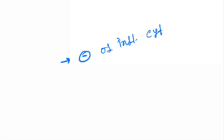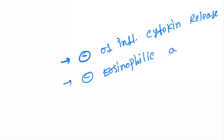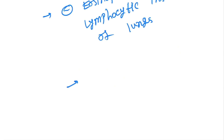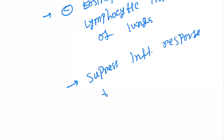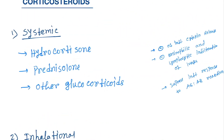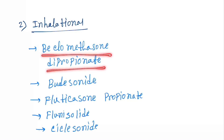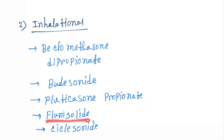Corticosteroids act by: first, inhibition of inflammatory cytokine release; second, they inhibit eosinophilic and lymphocytic infiltration of the lungs; and third, they suppress the inflammatory response to antigen-antibody reactions — mainly suppressing the immune-inflammatory response. Systemic drugs include hydrocortisone, prednisolone, and other glucocorticoids. Inhalation drugs include beclomethasone dipropionate, budesonide, fluticasone propionate, flunisolide, and ciclesonide.